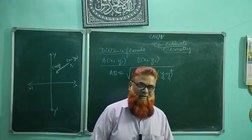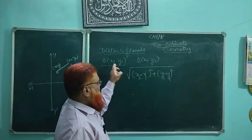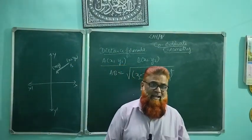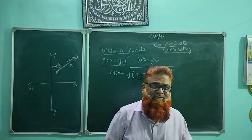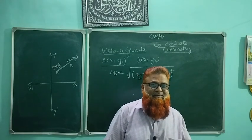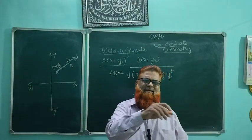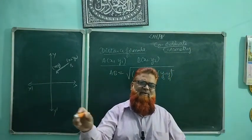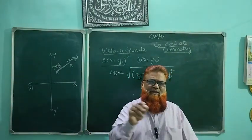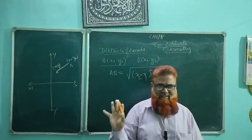This is the distance formula: AB equals square root of (x2 minus x1) whole square plus (y2 minus y1) whole square. It is very easy to remember — just write x minus x whole square plus y minus y whole square and put subscripts 2, 1 and 2, 1. So AB equals square root of (x2 minus x1) whole square plus (y2 minus y1) whole square. Is it clear?